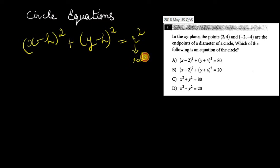Where r is the radius and (h, k) is the center. So the two things we need to write down the equation are the center and the radius. So how do we get to the center and radius from the endpoints of the diameter?